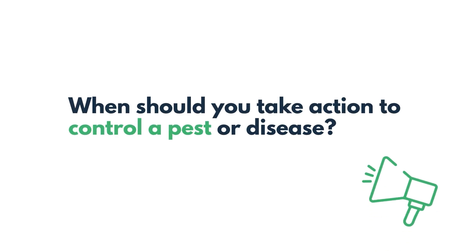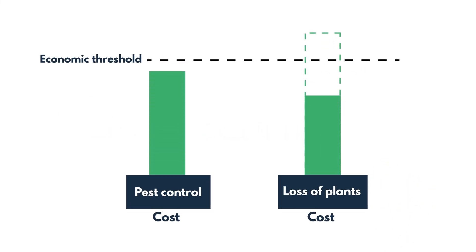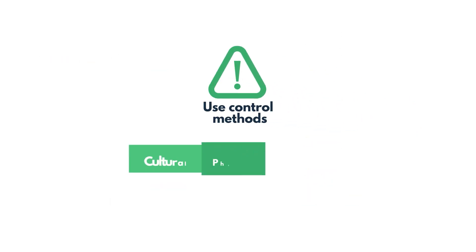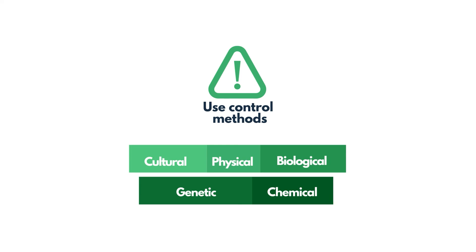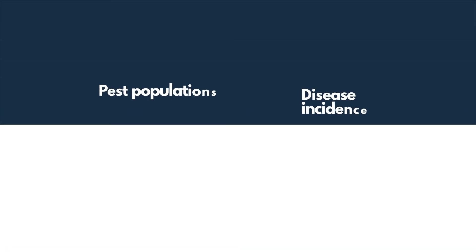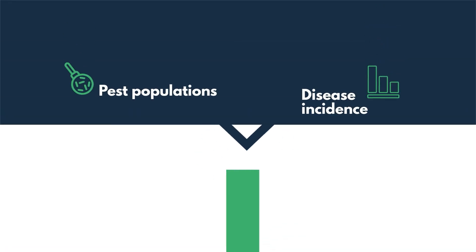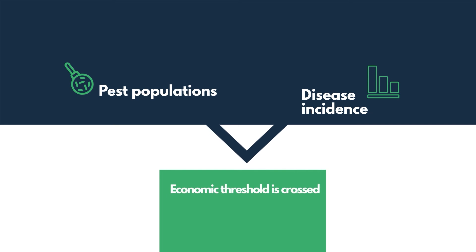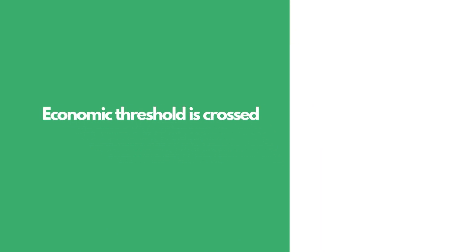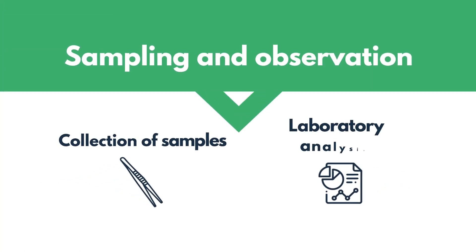When should you take action to control a pest or disease? A pest or disease should be controlled once it crosses the economic threshold — that is, when the losses caused by the incidence of the disease are greater than the expense of controlling it. By sampling pest populations or disease incidence, you will have the information you need to determine when this threshold has been crossed and when it's time to control unwelcome organisms. Regular sampling also gives you information about how effective your control measures are. Sampling and observation should be supported by laboratory analysis if necessary.